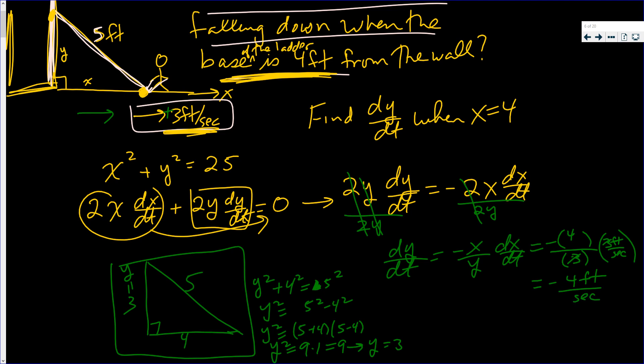Are the units correct? The ladder is moving up and down, so yes, it's feet per second. But what about the negative? If someone is moving the ladder to the right, the top of the ladder is going to be moving down. Down is negative; up would be positive. So you very much need that negative sign.